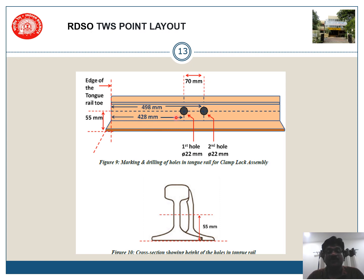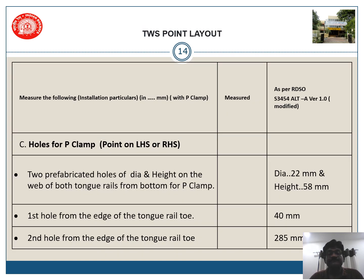So the first hole is at 428 mm, second hole at 498 mm as per RDSO, with 22 mm diameter. The distance between the two holes is 77 mm, and the height at which the hole shall be provided is 55 mm from the bottom.